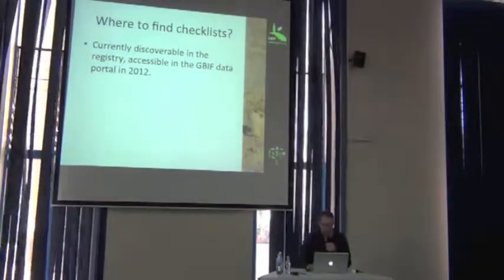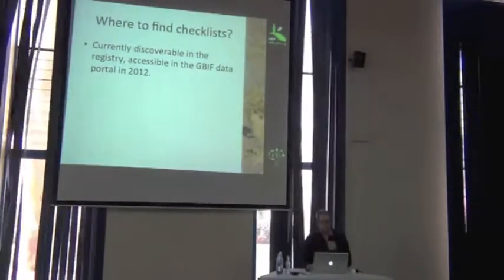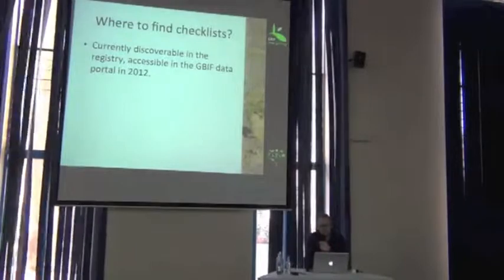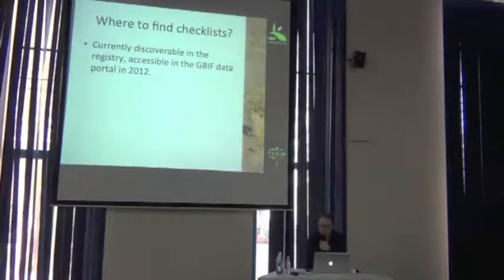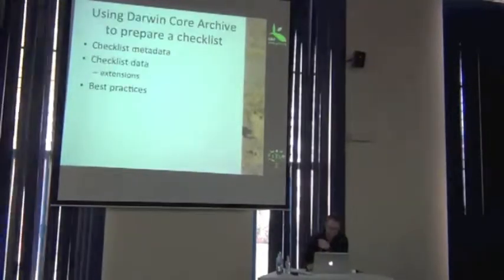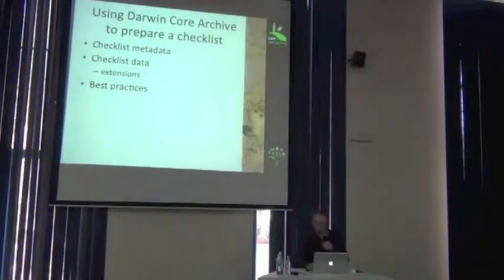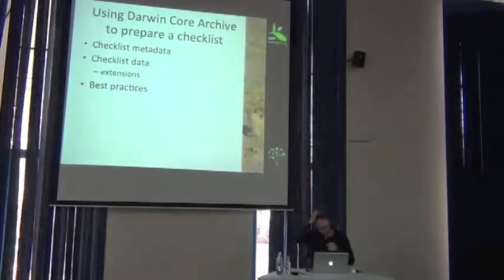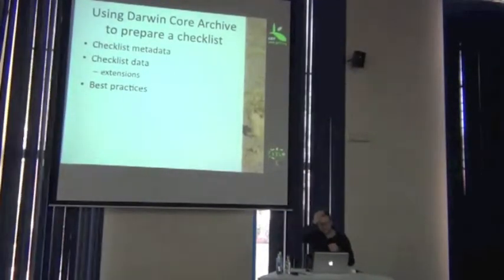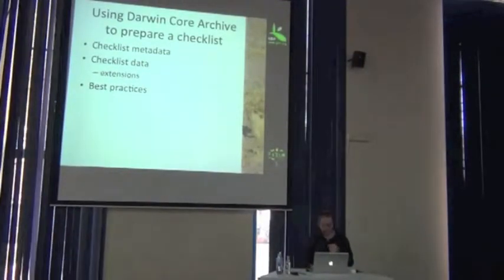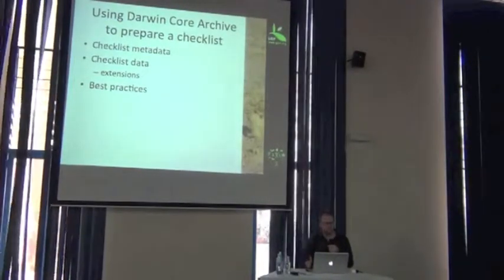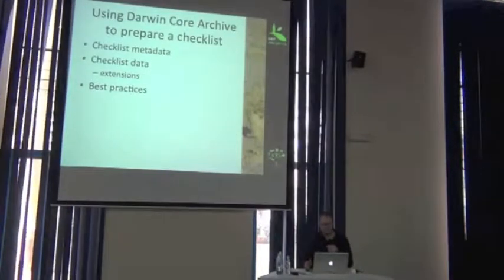Where can we find checklists? They are discoverable in the registry today, and in the next version of the GBIF data portal this year, you're going to be able to discover the checklists there as well. The steps to basically create an occurrence dataset and a checklist dataset in the IPT are basically the same — the only difference comes with choosing the right core.